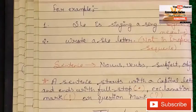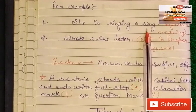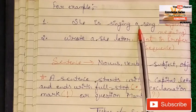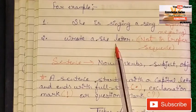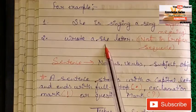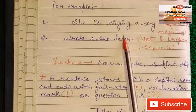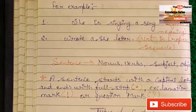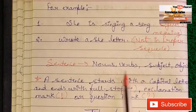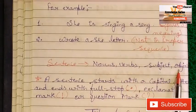Let's understand this with an example. 'She is singing a song' — is this correct? Yes, because this group of words gives a complete meaning. Now see another group of words: 'wrote a she letter' — is this correct? No. A sentence must have all the words in proper sequence.